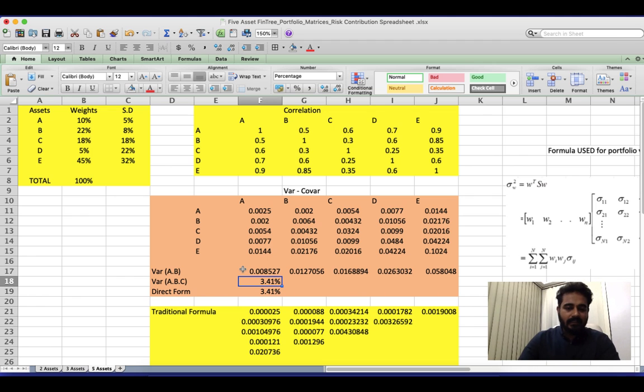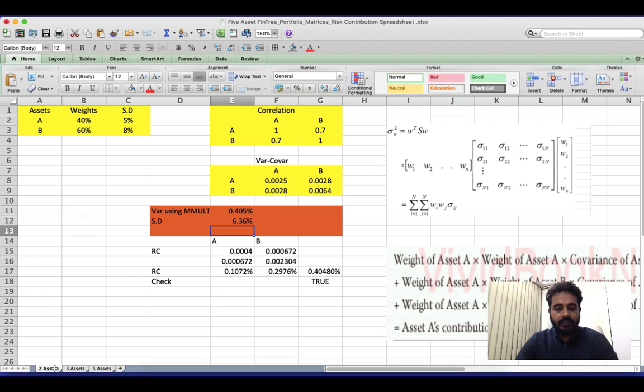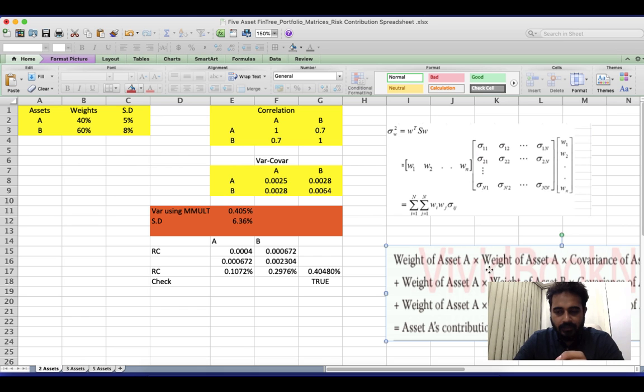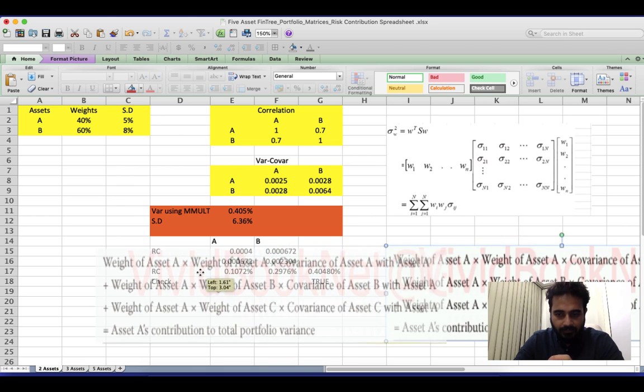Now what we would learn next is once we've learned to calculate variance, the second part, how do you calculate the risk contribution? For example, look at this. The total variance is 0.405, but how much of that variance is coming from A and how much of that variance is coming from B? That's what we want to learn now.